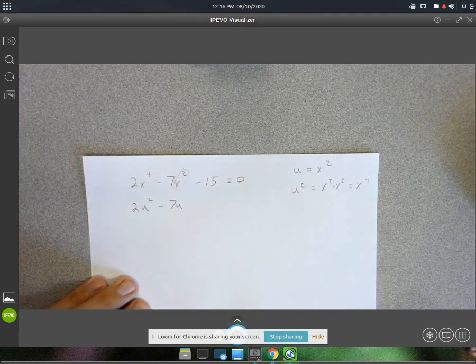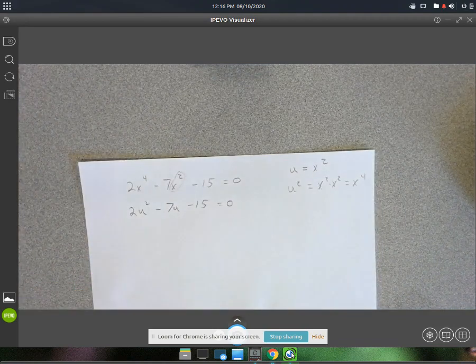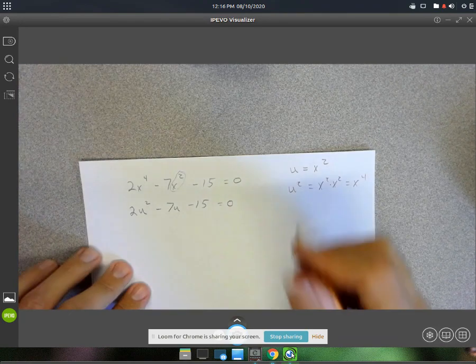Minus 7u minus 15. Now to see if it will factor, we'll have to use the old X method.